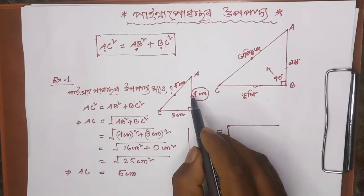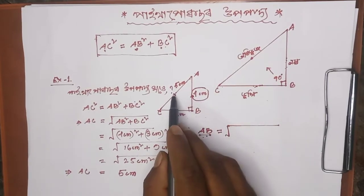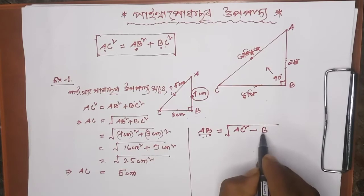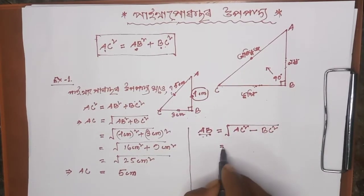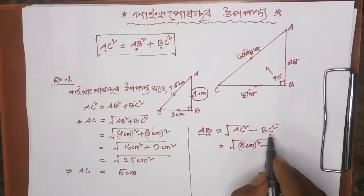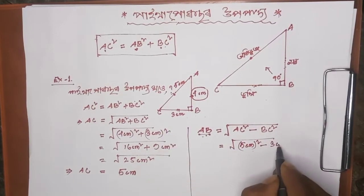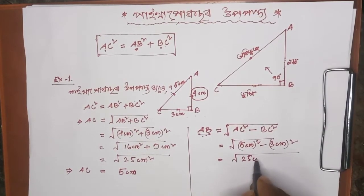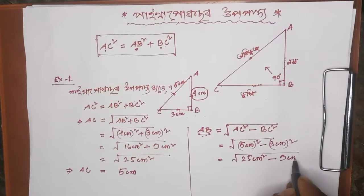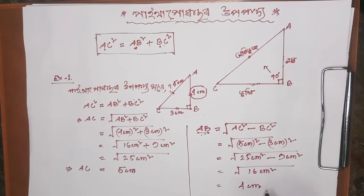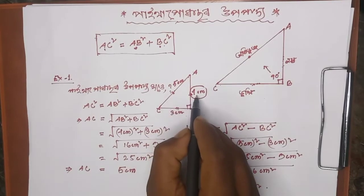1 cm squared minus 12 cm squared gives B. AB squared equals AC squared minus BC squared. 5 cm squared minus 3 cm squared equals 25 cm squared minus 9 cm squared, which is 16 cm squared. So AB is 4 cm.